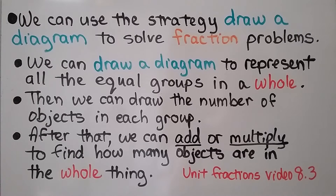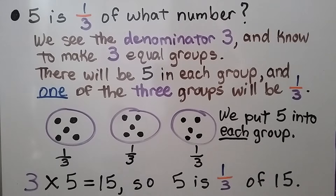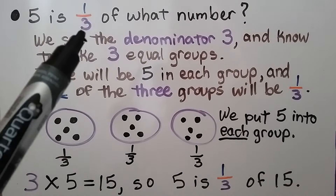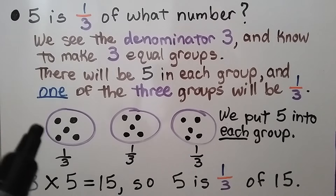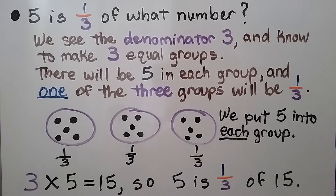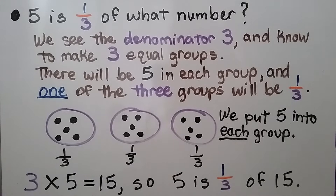When we first learned about unit fractions back in Video 8.3 — if you haven't seen it, there's a link in the description so you can watch it first — if we need to find 5 is one-third of what number, we see the denominator 3 in the fraction one-third, and we know to make 3 equal groups. There'll be 5 in each group, and 1 of the 3 groups will be one-third. We put 5 into each group. 3 groups times 5 in each group is equal to 15, so 5 is one-third of 15.